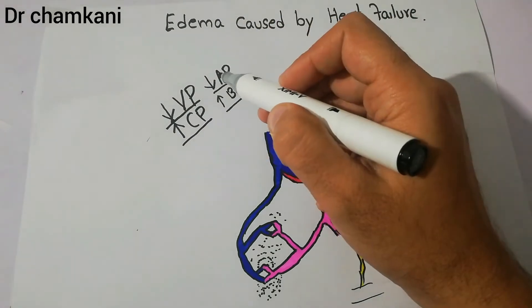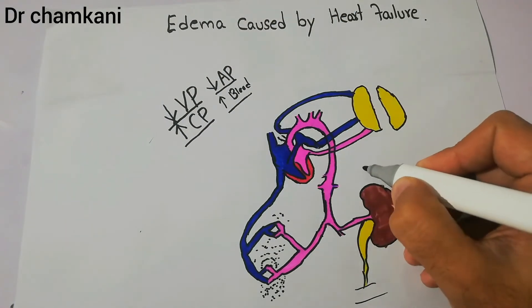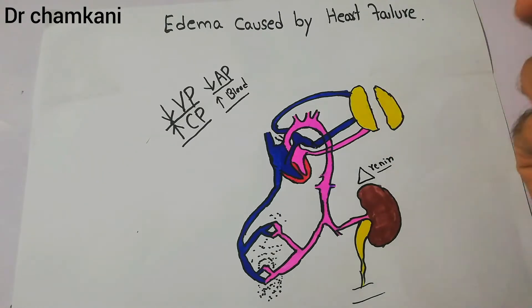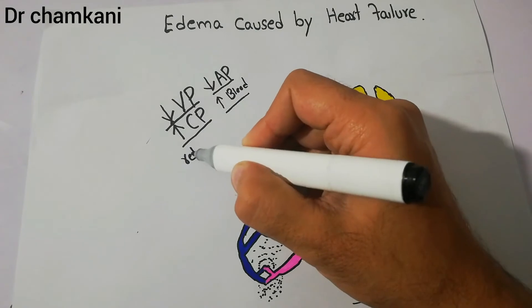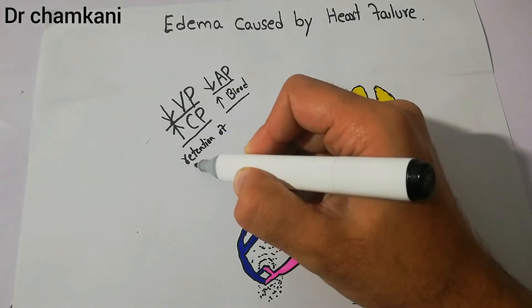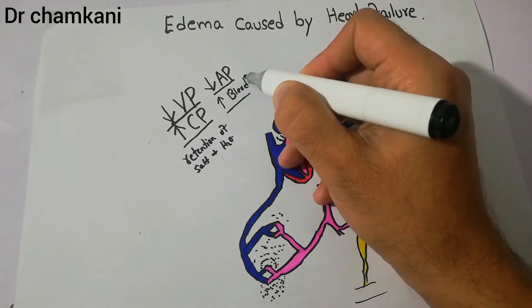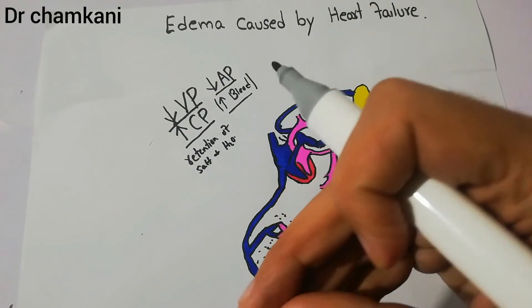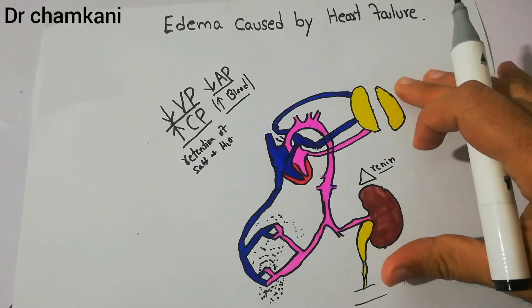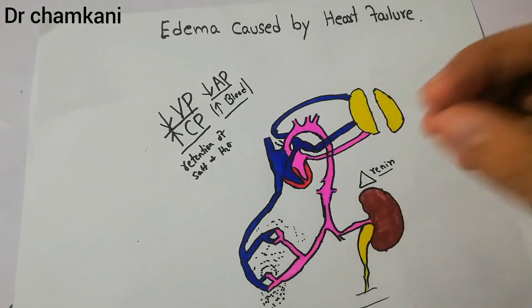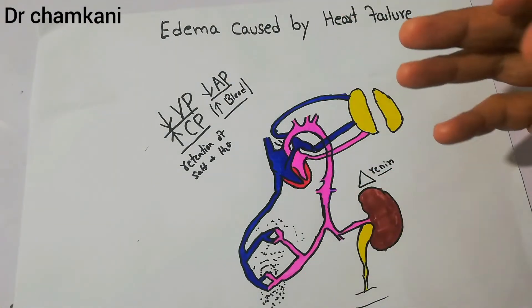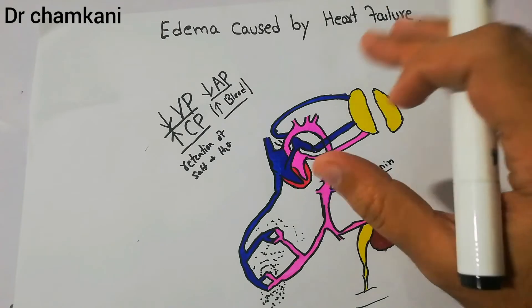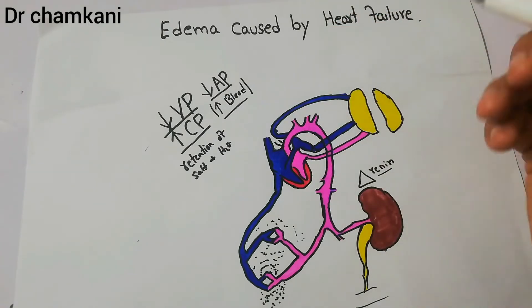Due to the fall in arterial pressure, there is decreased blood supply to the kidneys, and the kidneys release renin. This ultimately leads to the formation of angiotensin, which leads to retention of salt and water. This further increases blood volume, which further increases venous pressure and capillary pressure, so more and more fluid accumulates in the tissues. This accumulation especially occurs in the feet — edema initially occurs in the feet as pedal edema — then it may progress slowly toward the knees, thighs, and even abdominal edema or ascites can occur, along with liver congestion.